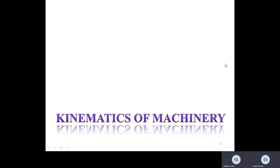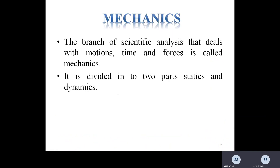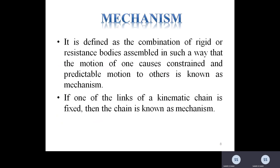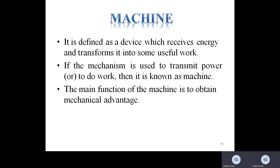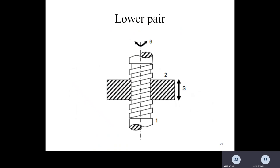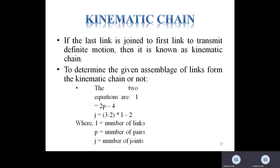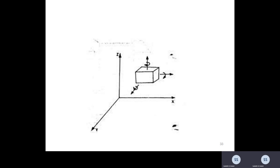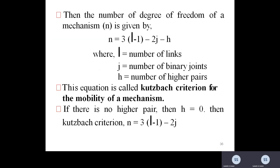In the previous lecture we discussed the basics of LTM, where we covered mechanisms, machinery, kinematics, statics, and dynamics. After that we proceeded for the link-pair chain condition, where L = 2P - 4, and another equation equal to 3/2(L-2). Then we discussed locked chain, constrained chain, unconstrained chain, different kinds of joints, and degree of freedom and mobility.